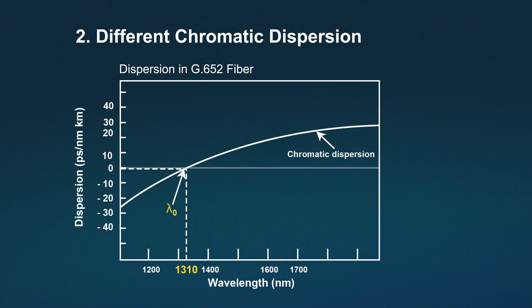In contrast, 1550 nanometer modules have relatively higher dispersion, around 17 picoseconds per nanometer kilometer, which becomes more noticeable in high-speed data transmission.